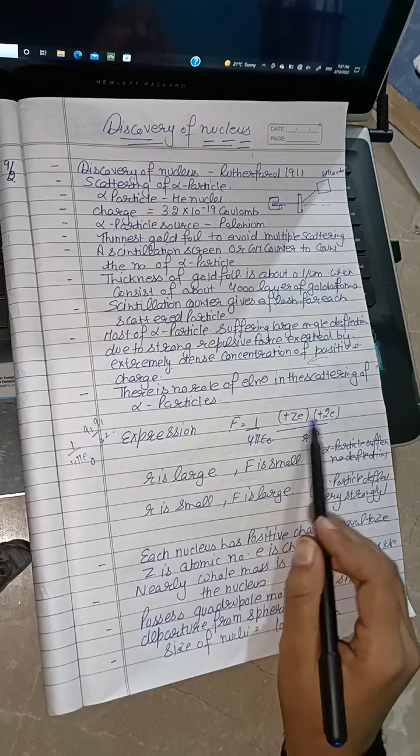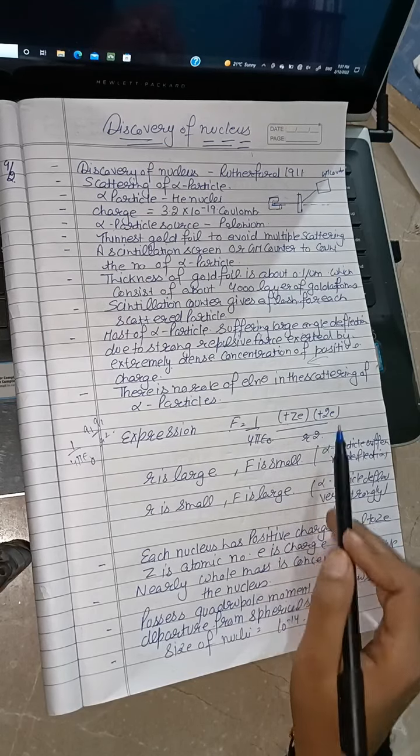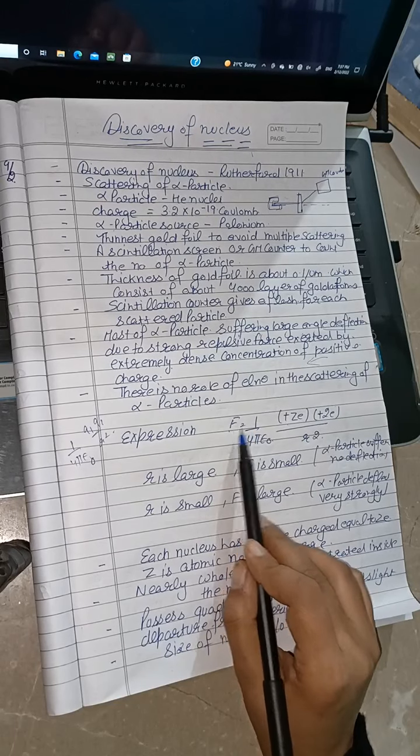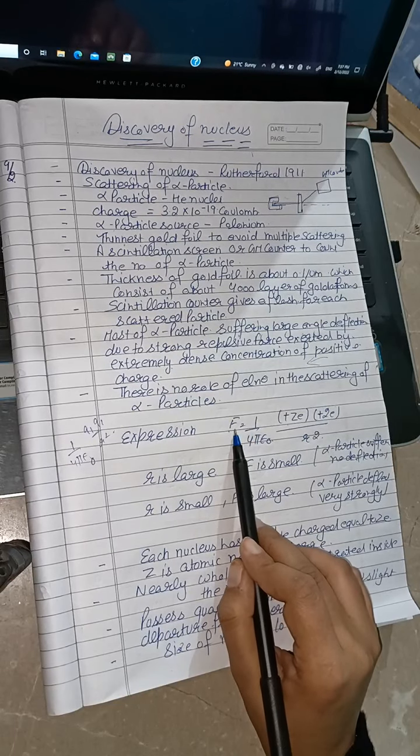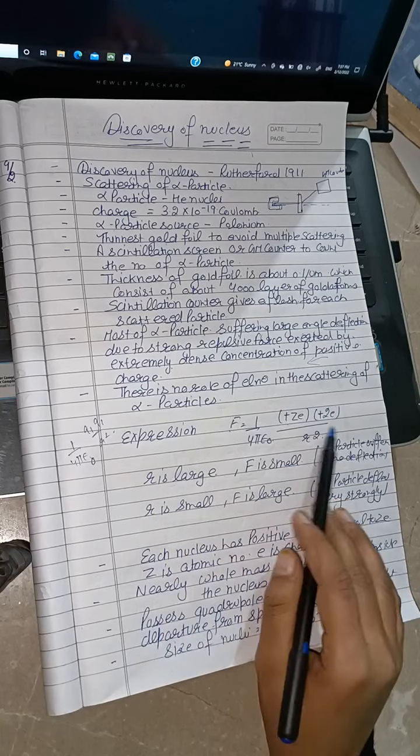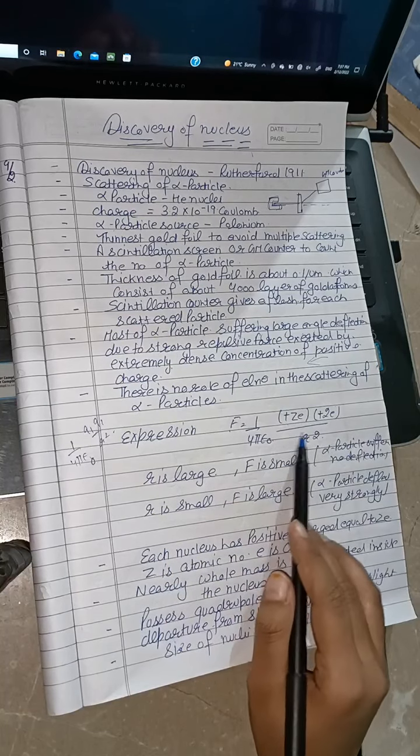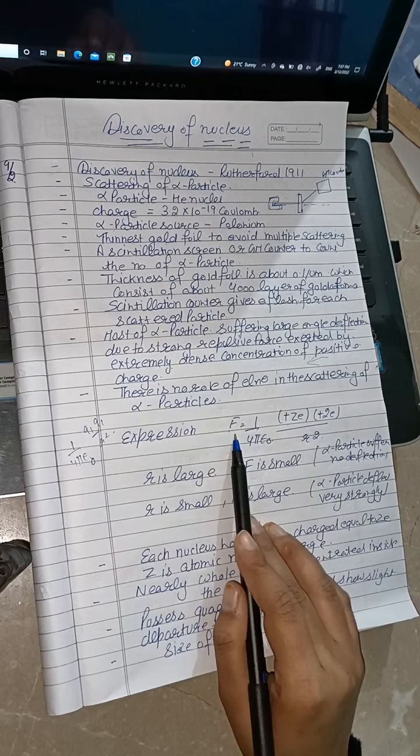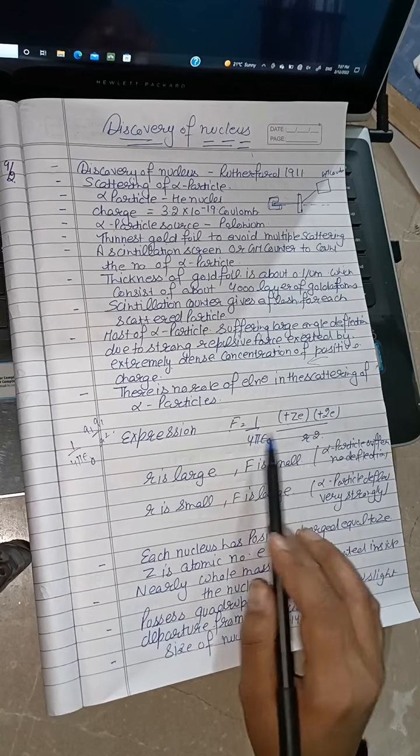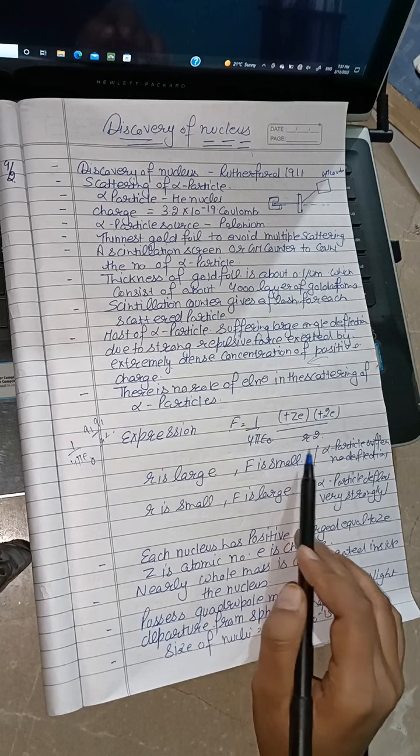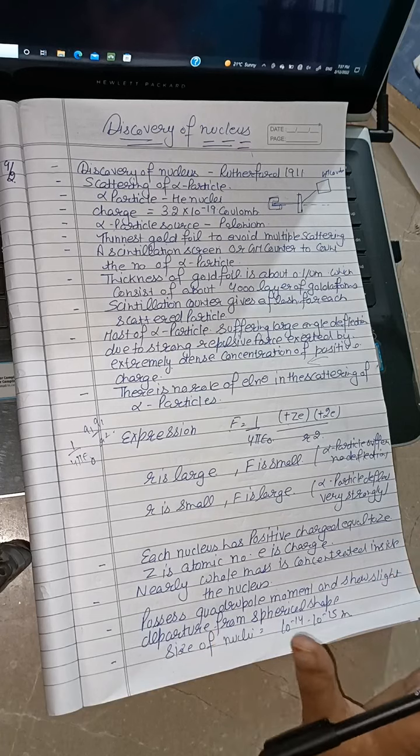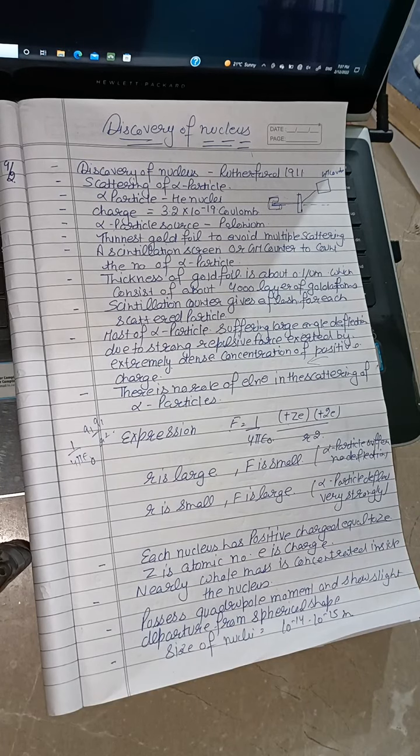If the distance r is large between the nucleus and alpha particles, then the force will be small and the alpha particles will show no deflection. If the radius is small, then the force will be larger because force is inversely proportional to distance squared, so alpha particles will show strong deflection and repel back.